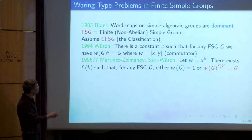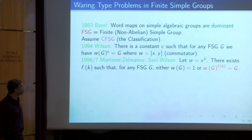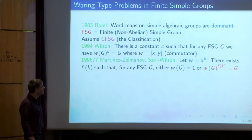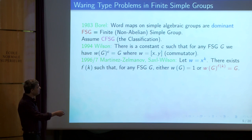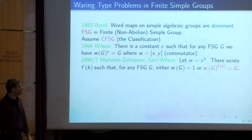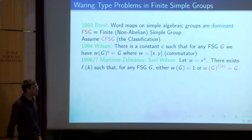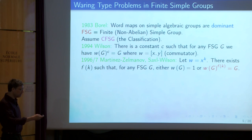We also have a result of Martina Zelmanov and Saxl–Wilson independently, at essentially the same time, dealing with powers. Powers are the main object of the Waring problem, so it's interesting to study them in this context. If we take the word map x^k, then for a finite simple group, either wG is 1 — namely for all elements x^k is 1, which can happen — or if it's not always 1, then there is some bounded product giving you the whole of G, where the exponent depends on k.